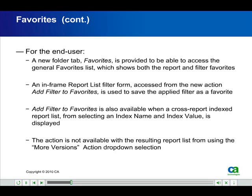For the end user, a new folder tab, Favorites, is provided to access the general favorites list, which shows both the report and filter favorites. An in-frame report list filter form, accessed from the new action Add Filter to Favorites, is used to save the applied filter as a favorite. Add Filter to Favorites is also available when a cross-report index report list, from selecting an index name and index value, is displayed. The action is not available with the resulting report list from using the More Versions action drop-down selection.